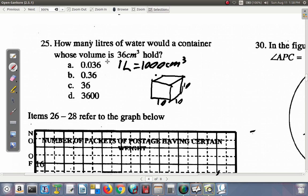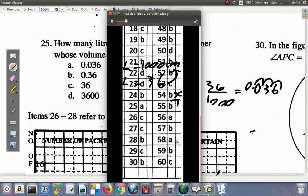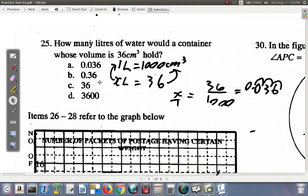Here, 1 liter is a thousand centimeter cubed. How many liters of water would a container with volume of 36 centimeter cubed hold? So if 1 liter is a thousand centimeter cubed, and x liters is 36 centimeter cubed, this over this is equal to this over this. So x over 1 is equal to 36 over 1000, which is 0.036 liters. So question 25 is A. This is a measurement question and you should study how to answer this type of question.